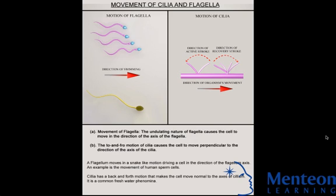There are two types of cilia: motile cilia and non-motile or primary cilia. Primary cilia serve as sensory organelles. In eukaryotes, cilia and flagella together make up a group of organelles known as undulipodia. Eukaryotic cilia are structurally similar to eukaryotic flagella.